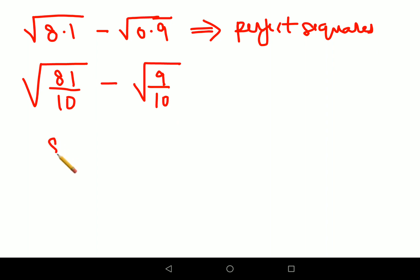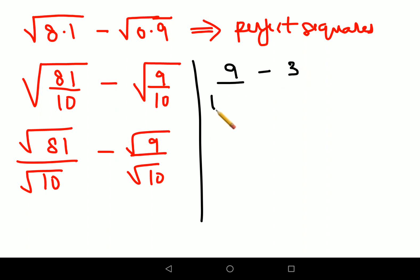Now understand the roots can be separated. So this now becomes 9 upon √10. Now let's do the square roots. Take the square root. Square root of 81 is 9 minus square root of 9 is 3, and then it's still divided by √10 and √10.